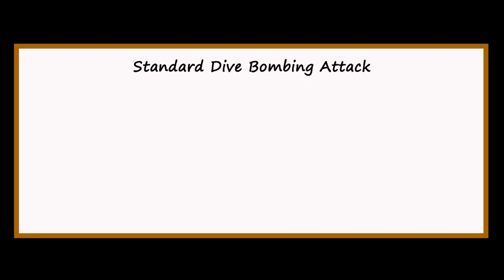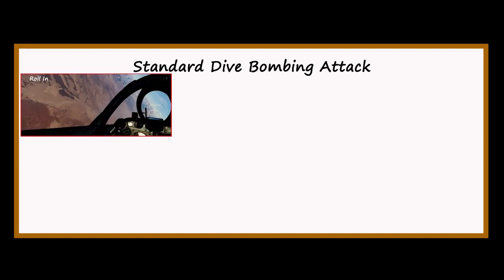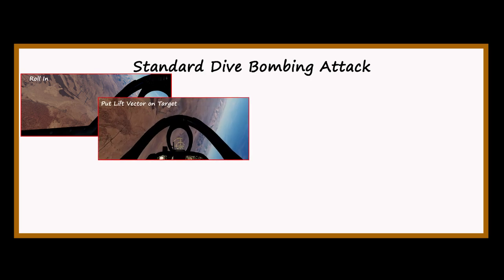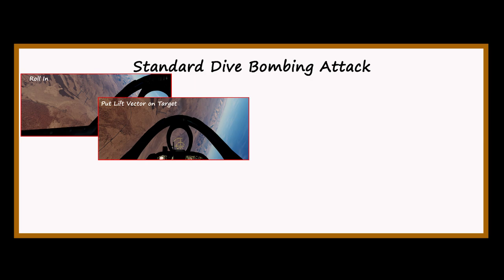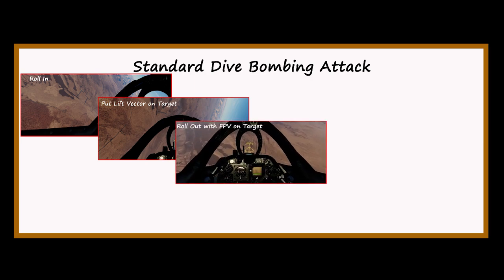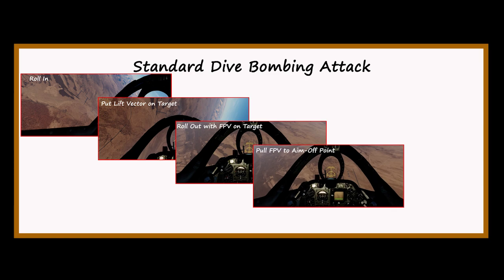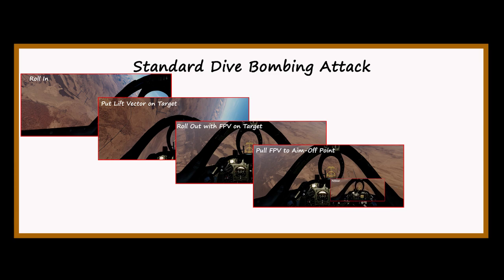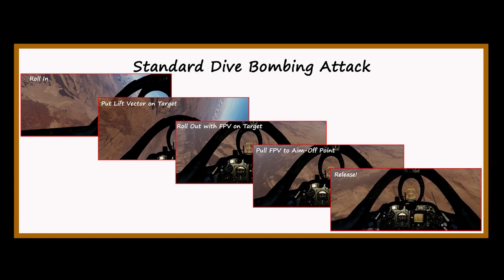Let's take a look at our old friend, the standard dive bombing attack. First, once we get to the right altitude and speed, we roll in with our lift vector pointed at the target. We pull until the flight path vector — the top of the sight ladder — is over the target and roll out. Then we pull the flight path vector up to the aim-off point, wait, and when the PIPR is over the target, we release the bombs.